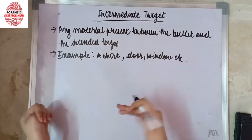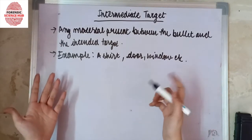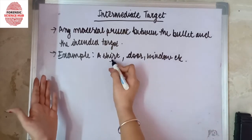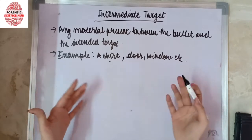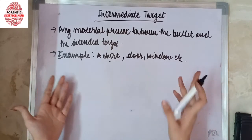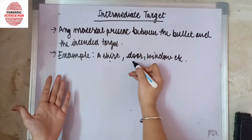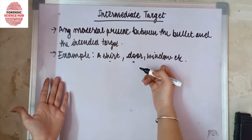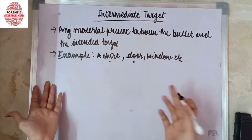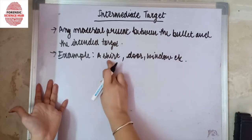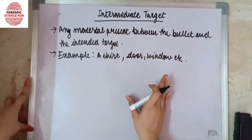The type of intermediate target will decide the amount of effect it will have on the wounding power. For example, a shirt is going to cause very little influence on the bullet, whereas a door, if present as an intermediate target, is going to lead to massive changes in the bullet's range and behavior.